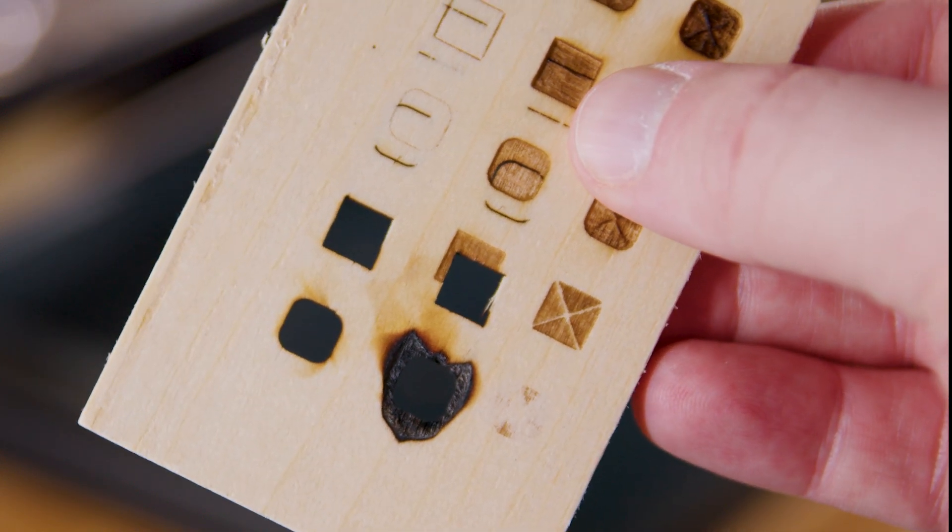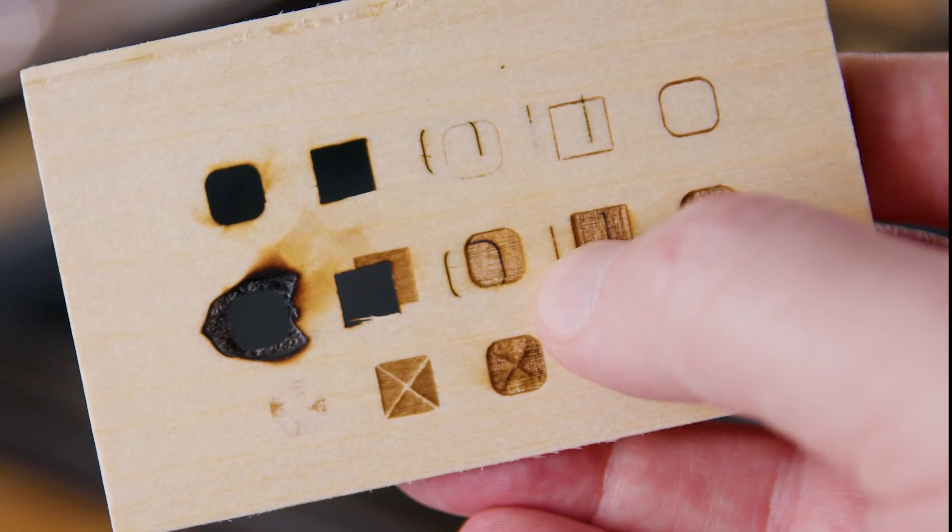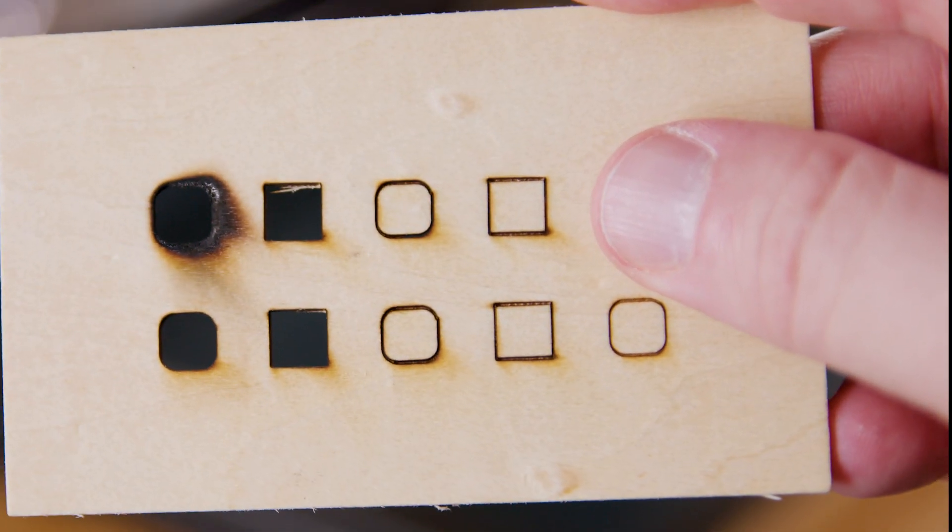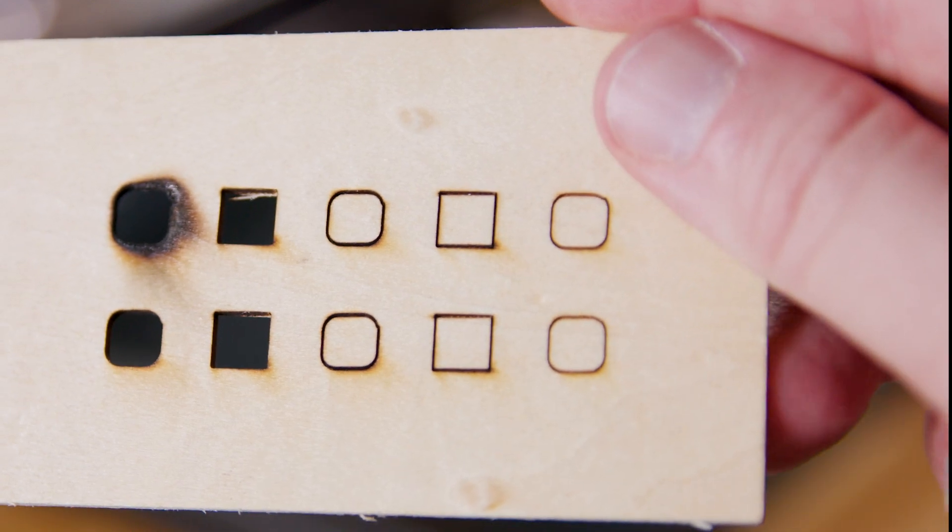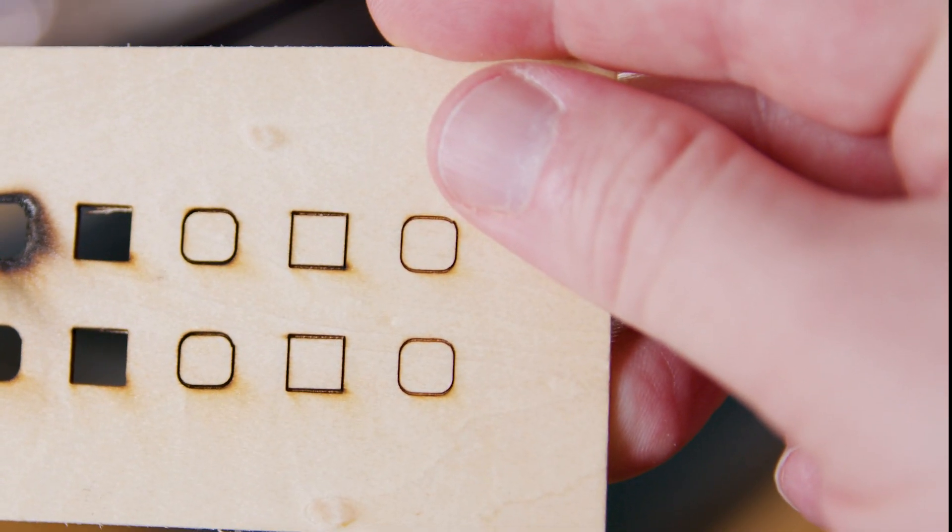Overburn can occur due to several factors, including increased laser power settings, too slow of movement speed, or improper focus of the laser beam. To prevent overburn, it's essential to calibrate the laser engraver settings appropriately for the specific material being used, and in this case, conduct tests as necessary.